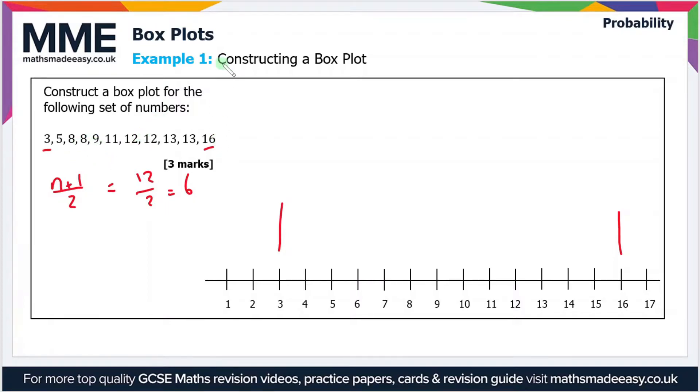Now these are already in order, which is nice, so we just have to count 6 along. So we've got 1, 2, 3, 4, 5, 6. So 11 is the sixth value, so that's the median. So let's mark that on the box plot.